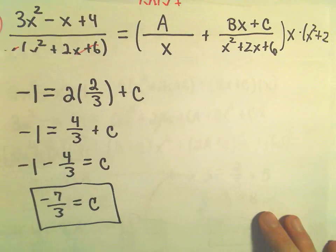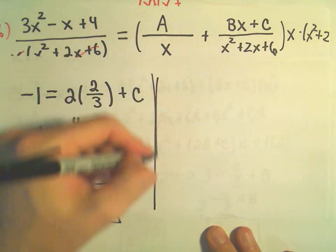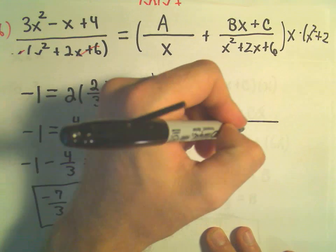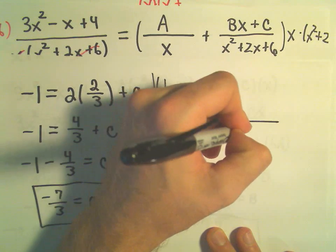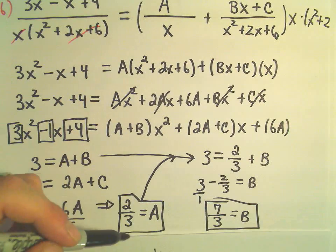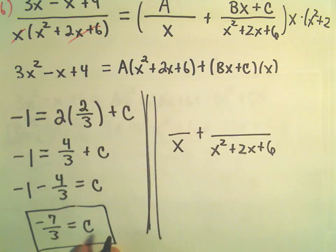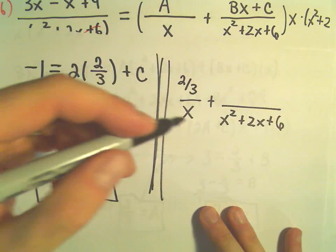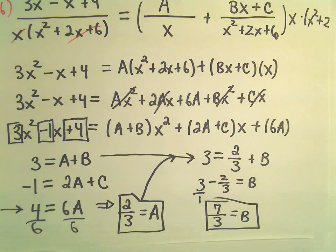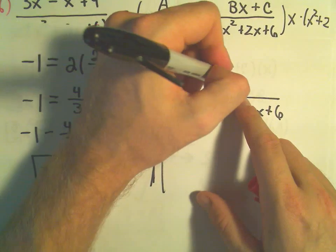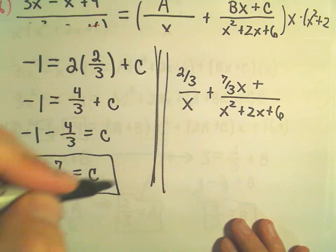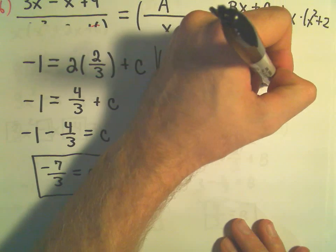So in conclusion, it says our partial fraction decomposition, it says we had A over x plus (Bx + C) over (x² + 2x + 6). Well, again, we figured out A, that was the very first one we found, that was 2/3, so that would go in the numerator. We figured out our B value. We said our B value was 7/3. So Bx, I'm going to have 7/3 times x. And then plus C, which is going to be negative 7/3.